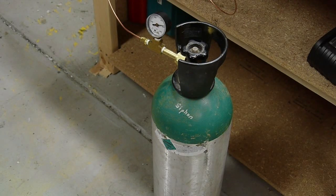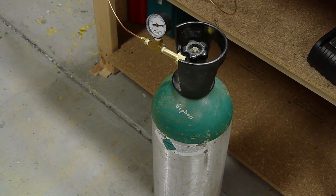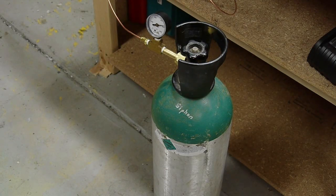Here we have a 20-pound CO2 cylinder, and it says siphon on there, which means that inside the tank there's a tube that goes all the way to the bottom. So when I open the valve, I get liquid CO2 out the output as opposed to just gas.